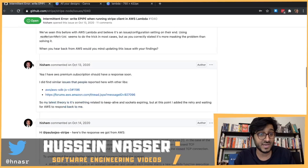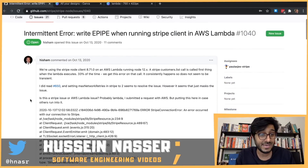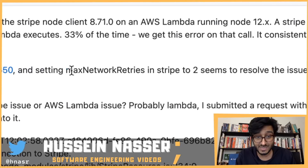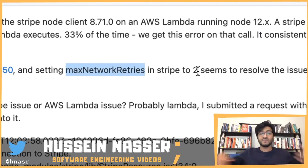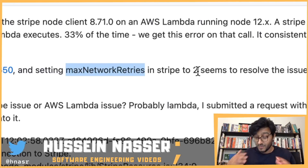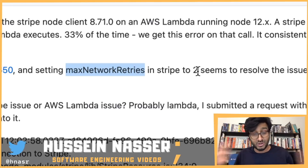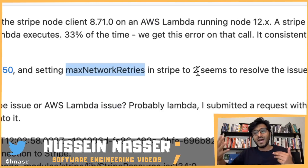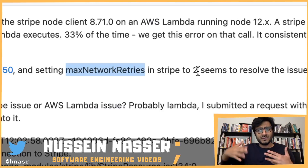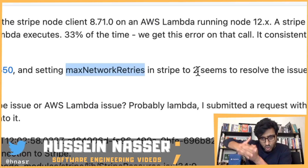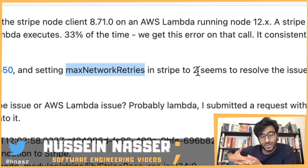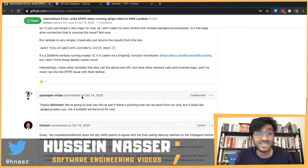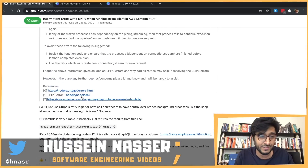That makes sense as to why increasing max retries to 2 solves it — the retry request will spin up a new container with fresh background processes that don't have that problem. Even if you hit the same container, you'd be lucky because the connection would just be found closed, and the Stripe Node logic would say 'okay, closed — let me open a new one.' It fixes it, but to me that's still a hack — and Hisham agreed.